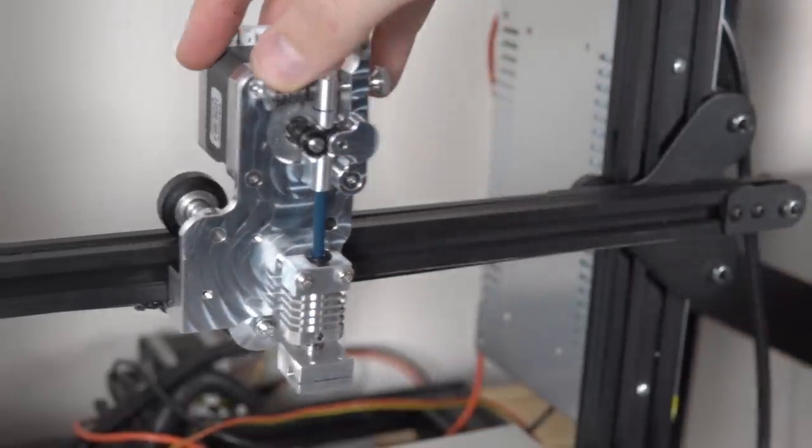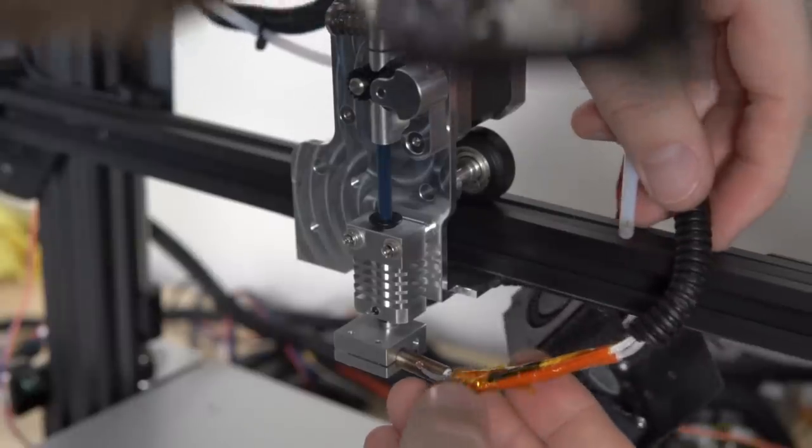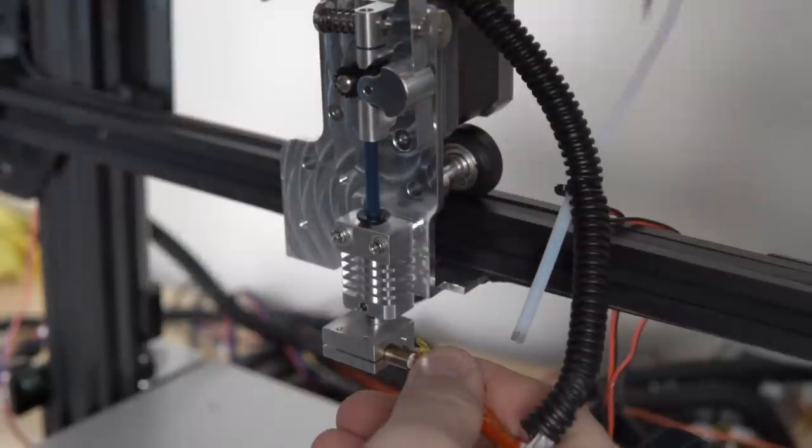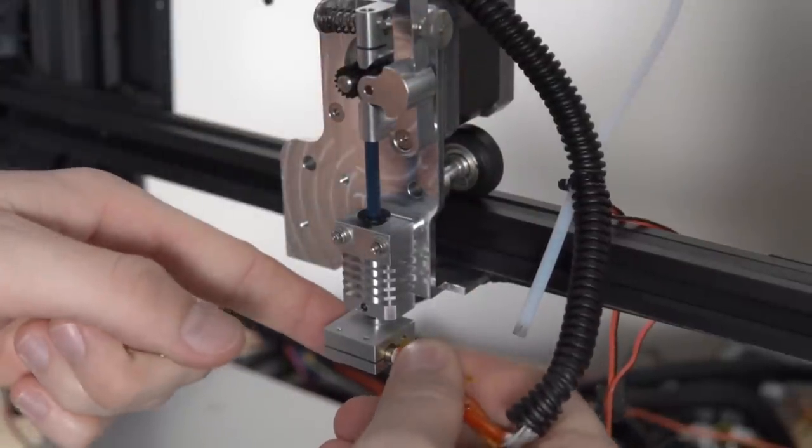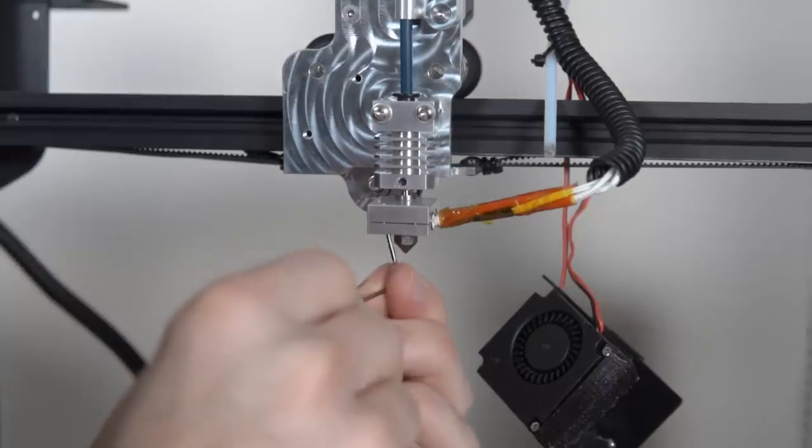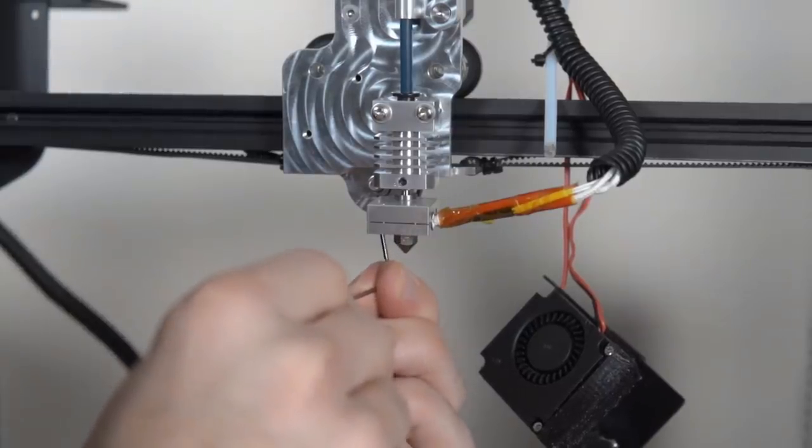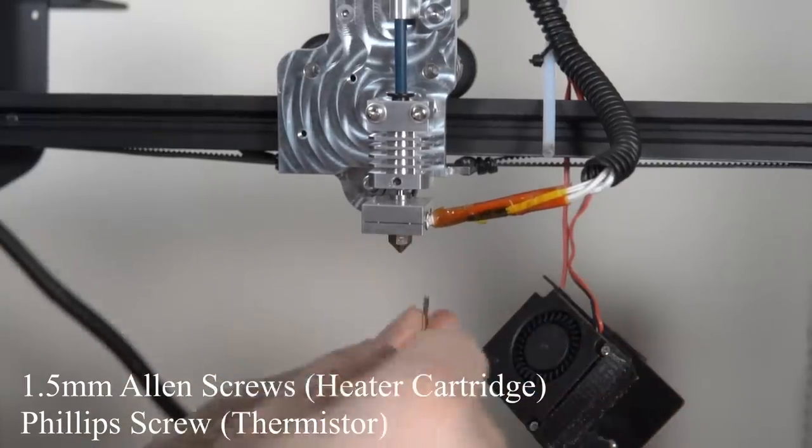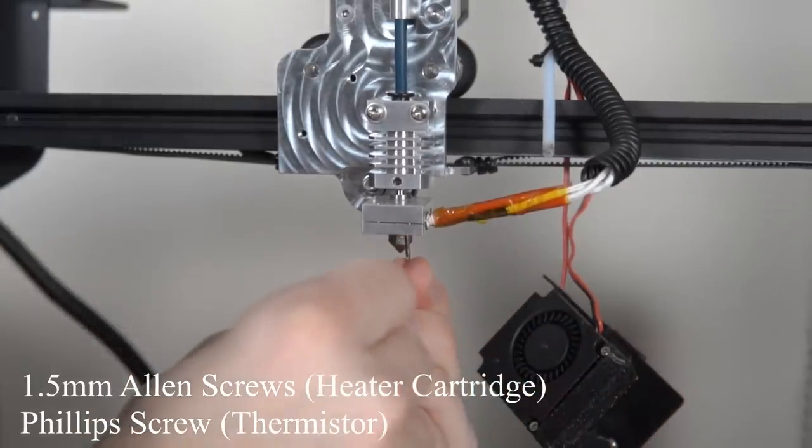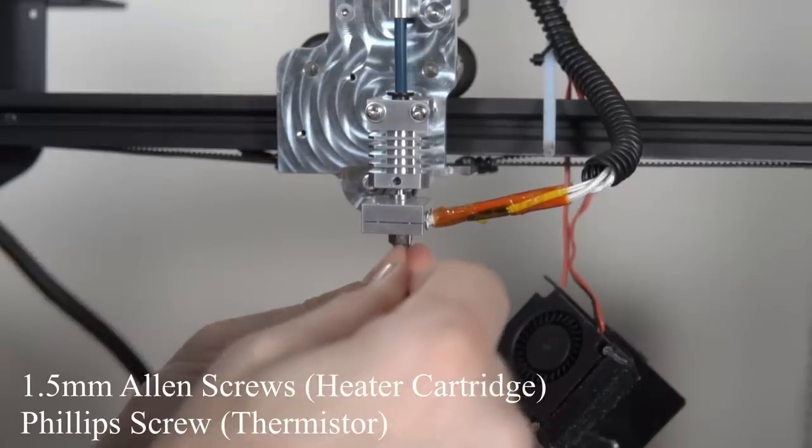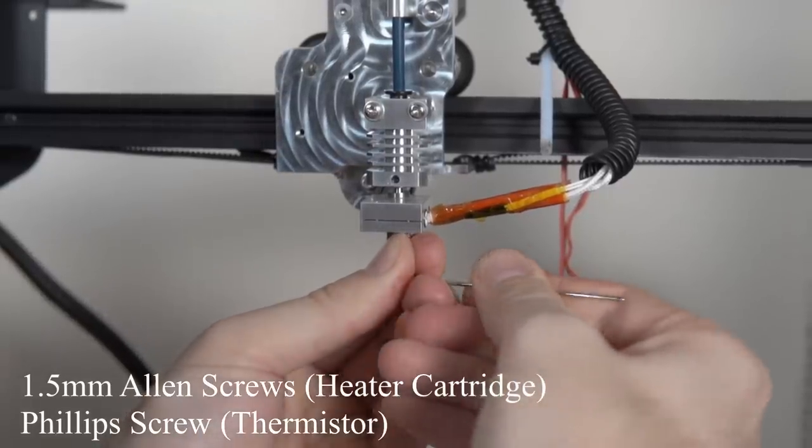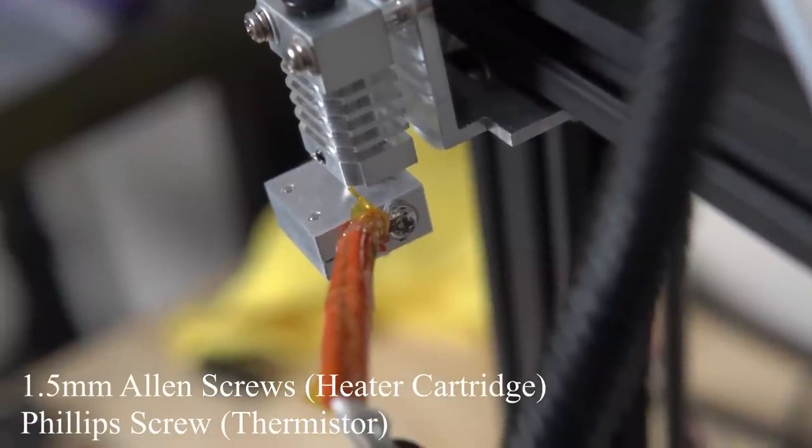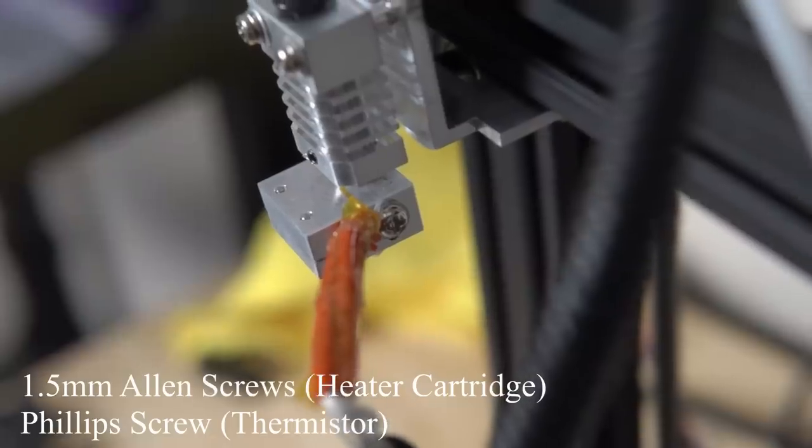Once you've got that installed, it's time to install the heater cartridge as well as the thermistor back into the new heater block. Install it the exact same way that you removed the existing one. Once they're in their slots, tighten the two Allen screws on the bottom of the heater block. That will clamp down on the heater cartridge and make sure it's secure and the heat is transferring well and it's not going to slide out. For the thermistor there's one screw to make sure the thermistor isn't able to slide out of its little hole.